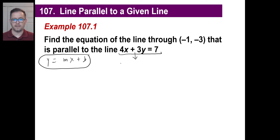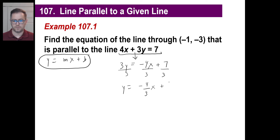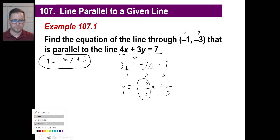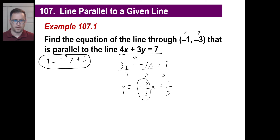Let's figure out the slope of this line. We get 3y on the left, mash this over to the right — that becomes negative 4x plus 7. Divide by 3, and we find that y equals negative 4 thirds x plus 7 thirds. The slope of this line is negative 4 thirds. It's parallel to that, so it has the same slope. We don't even have to go find the slope the long way — we can just write it in: m equals negative 4 over 3.